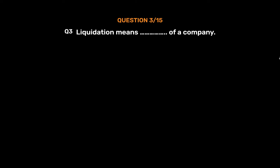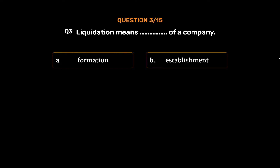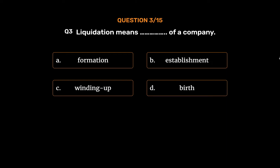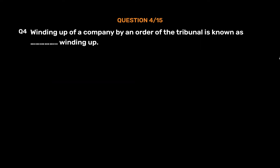Question number 3. Liquidation means what of a company? Option A: Formation. Option B: Establishment. Option C: Winding up. Option D: Birth. The correct answer is Option C — Winding up.